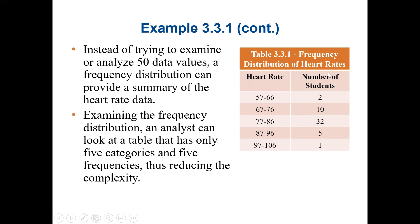This is the frequency distribution of the heart rate. We have categories: 57–66 per minute with 2 students, 67–76 with 10 students, 77–86 with 32 students, 87–96 with 5 students, and 97–106 with only 1 student. Based on this, an analyst can pick any category to examine.